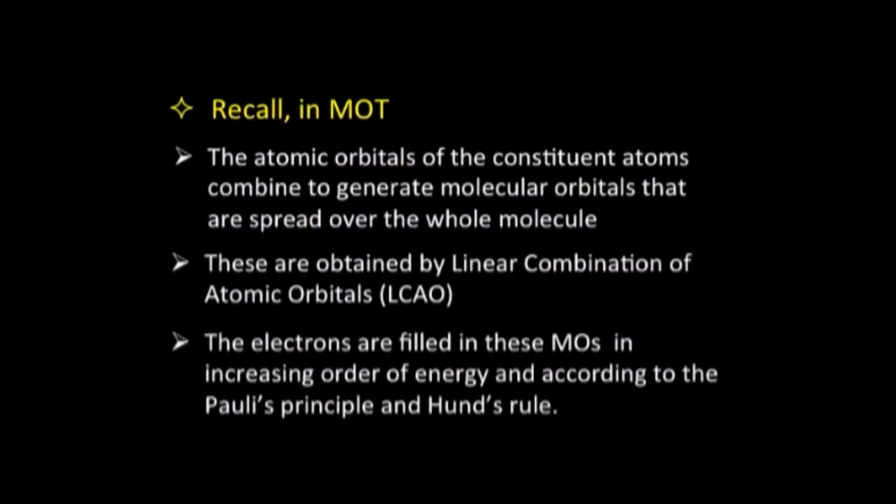Having got the molecular orbitals, what we do next is distribute the available electrons. There are two atoms, say atom A and B, with certain valence electrons. We pool those valence electrons and distribute them amongst the molecular orbitals in the order of increasing energies, ensuring that Pauli's principle and Hund's rule are adhered to. That is the basic approach of our molecular orbital theory.